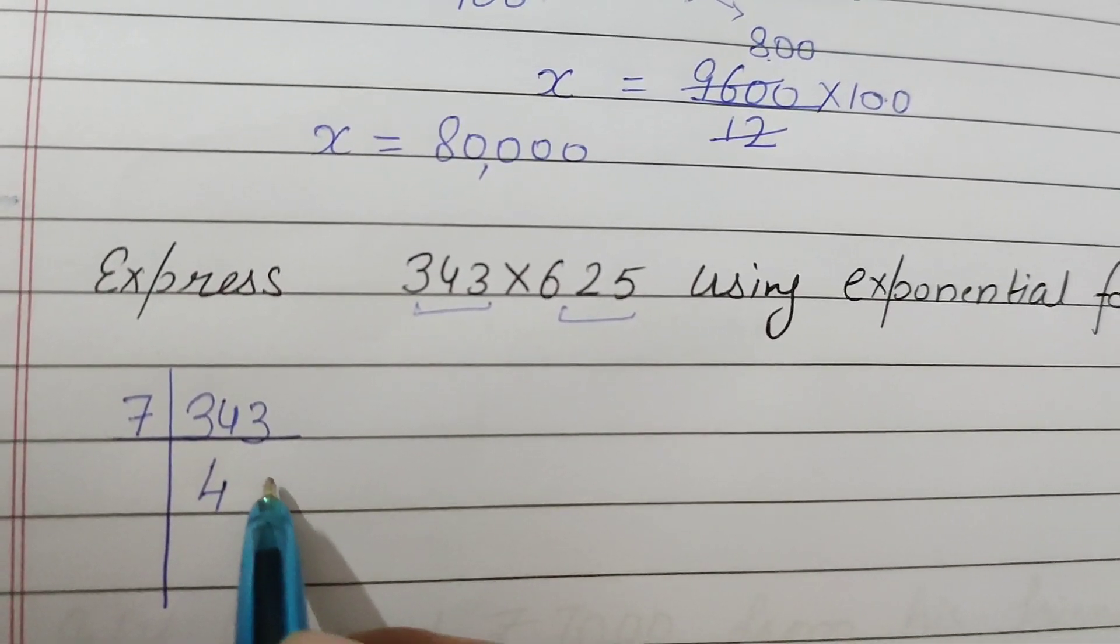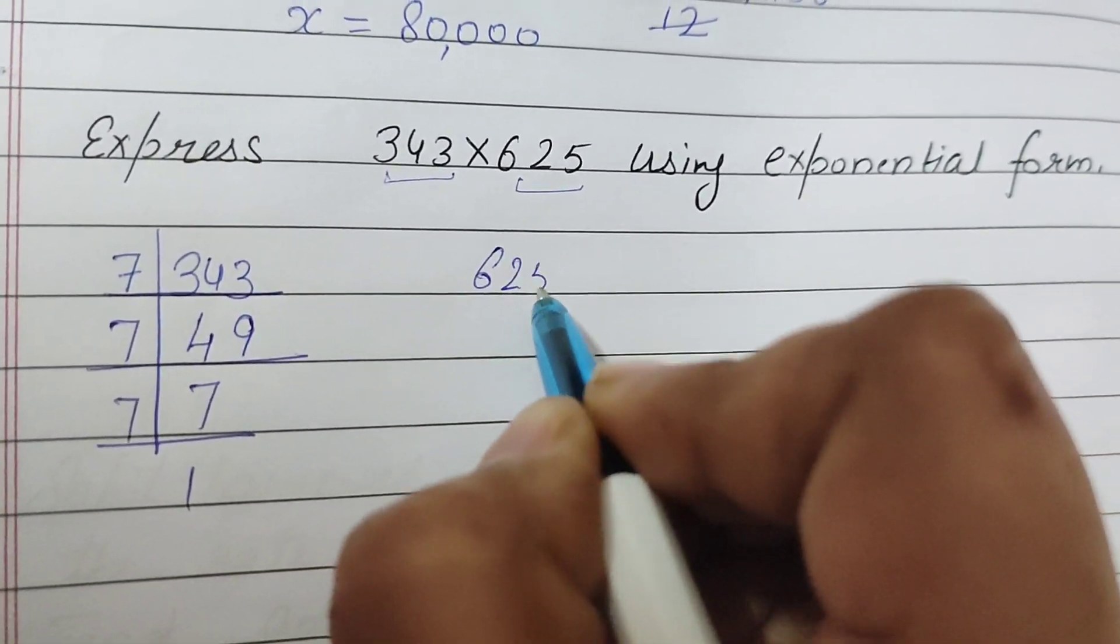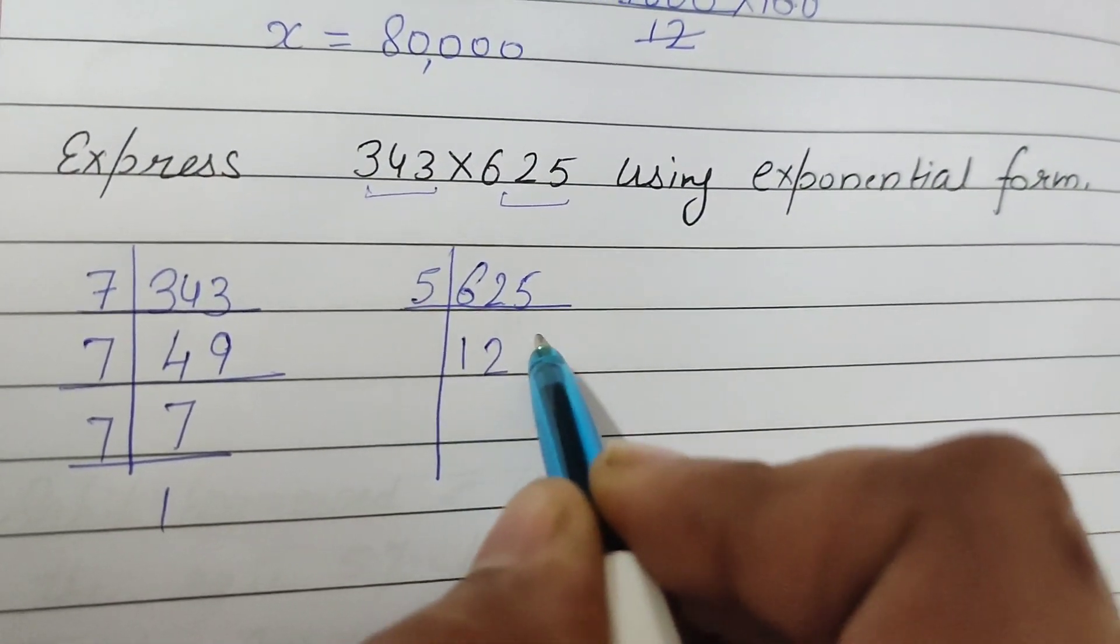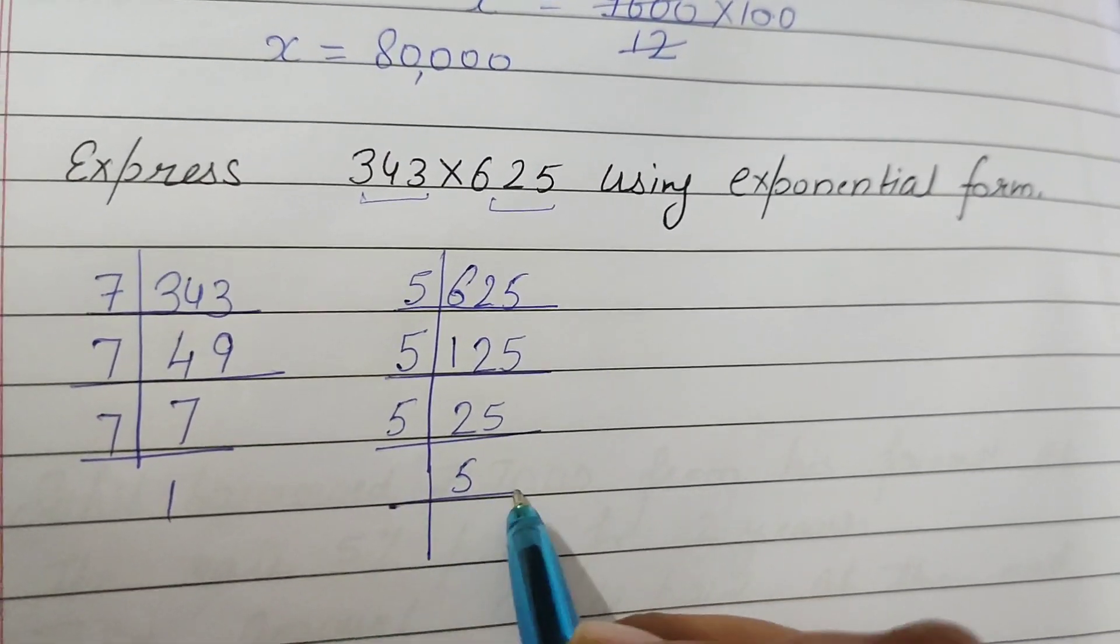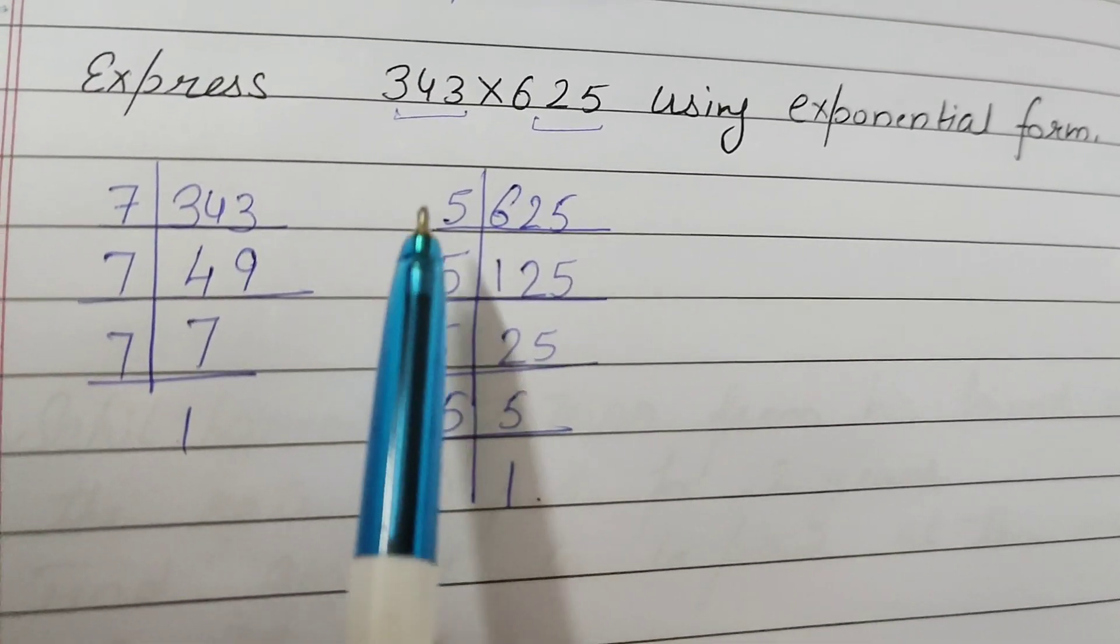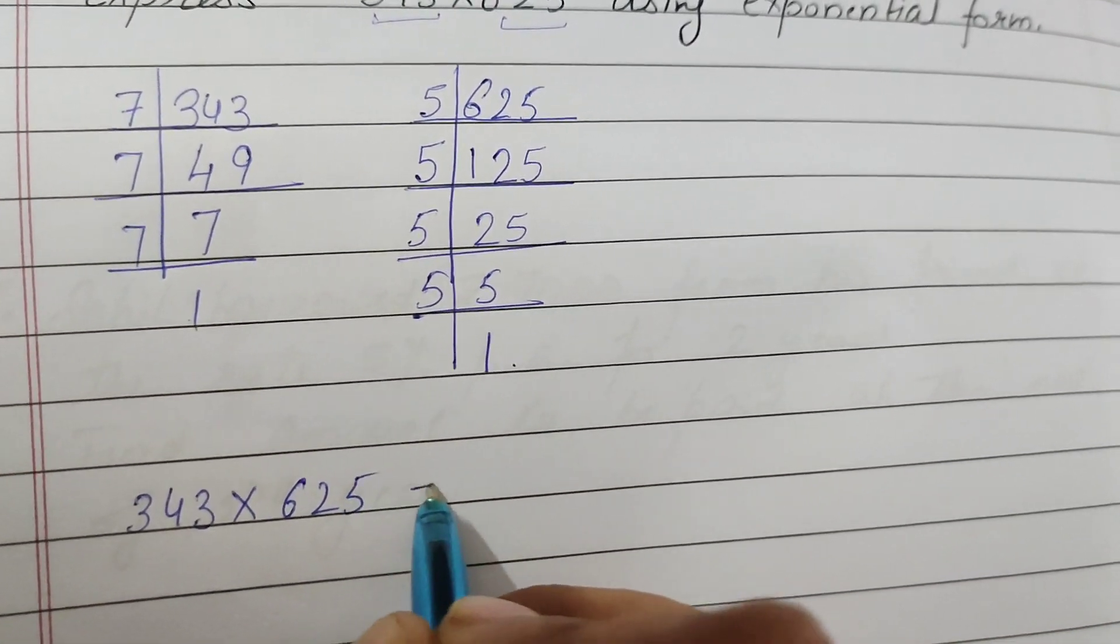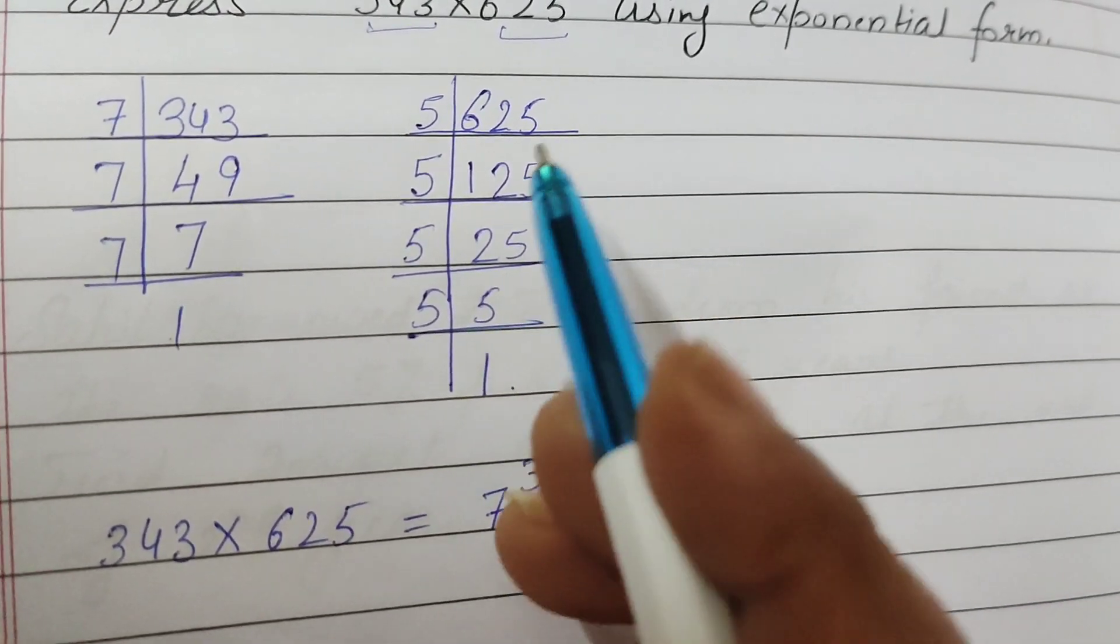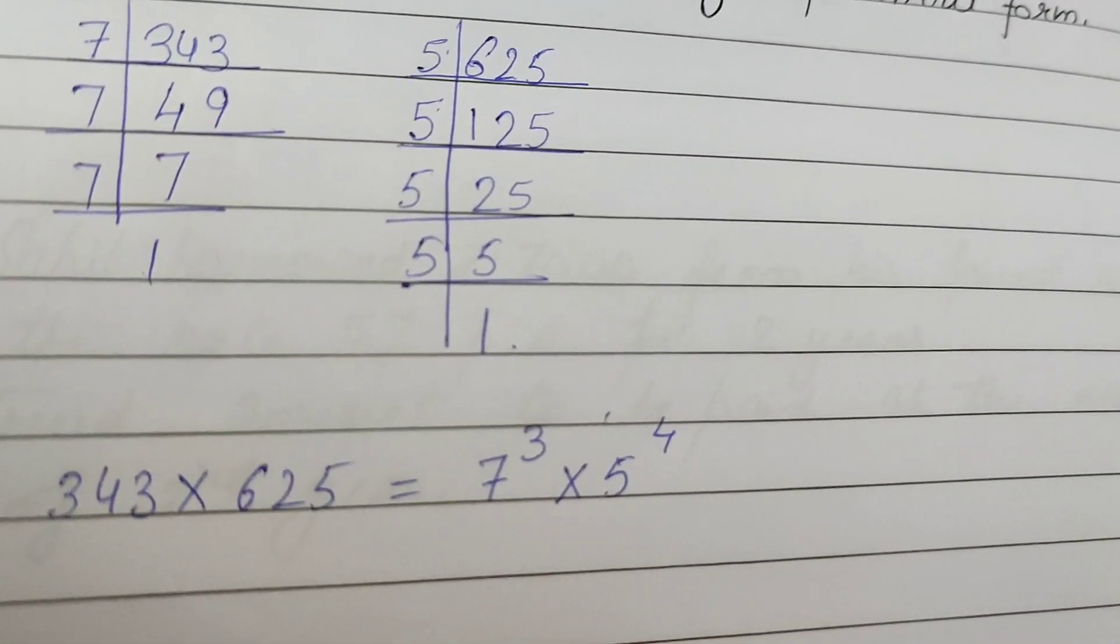7 fours are 28, 7 nines are 63, again 7 sevens are 49, 7 ones are 7. Same way we will find out the factors of 625. It is divisible by 5. 5 ones are 5, 5 twos are 10, 5 fives are 25, again 5 fives are 25, and last is 5 ones are 5. Now we need to express as exponential form. 343 into 625 equals 7 kitni baar, 1, 2, 3, so it can be written as 7 raise to power 3, and 5 kitni baar, 1, 2, 3, 4, so 5 raise to power 4. This is the way to express in the form of exponent.